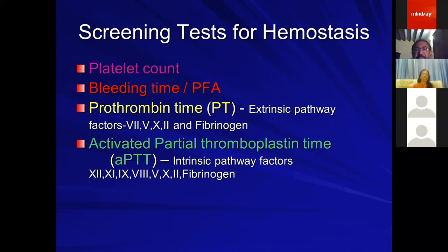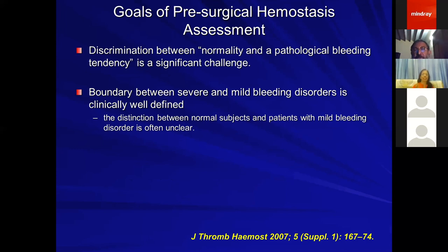The goal of pre-surgical hemostasis assessment is to address the concern that inducing an injury during surgery will cause bleeding. We are trying to identify who will have abnormal bleeding compared to just normal bleeding. Discrimination between normality and pathological bleeding is a significant challenge. Differentiating severe from mild bleeding disorders is easy, but distinction between normal subjects and those with mild bleeding disorders is often unclear.